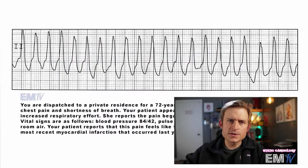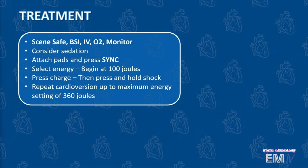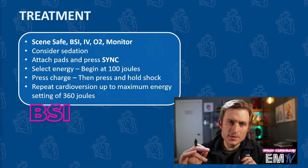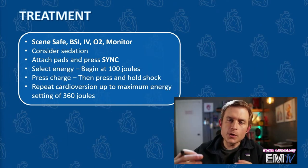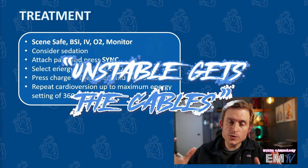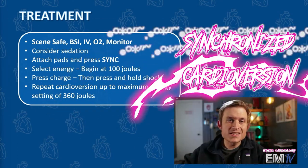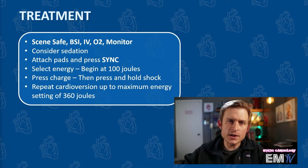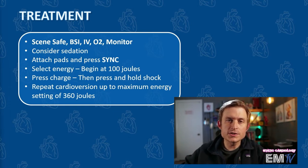Let's move on now to the treatment. Just like all of our static cardiology cards, I'm going to begin treatment by regurgitating the mantra: Scene Safe, BSI, IV, O2, Monitor. Now because I've determined that my patient is unstable — and as the saying goes, unstable gets the cables — I'm going to be performing synchronized cardioversion. To do this, I'll consider sedating my patient first and attaching the pads and pressing the sync button on my monitor. I'll then select my energy, beginning at 100 joules. I'll press charge, and then when ready, I'll press and hold the shock button to deliver the energy. I'll repeat this as necessary up to a maximum energy setting of 360 joules.